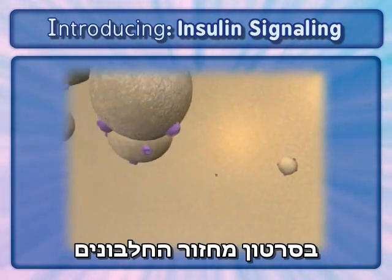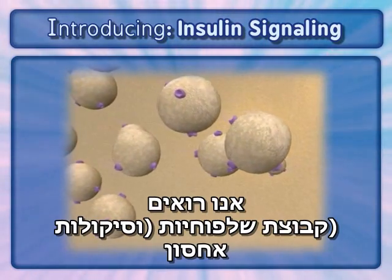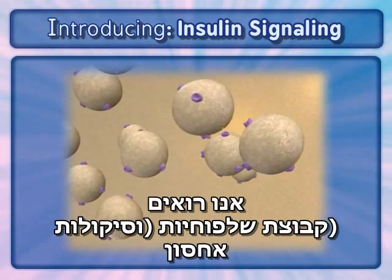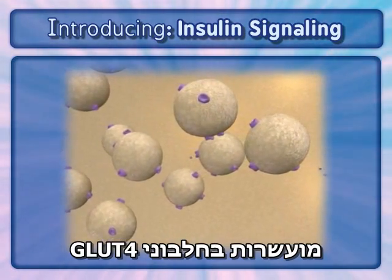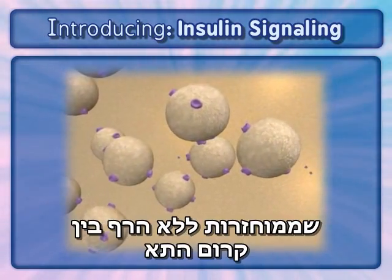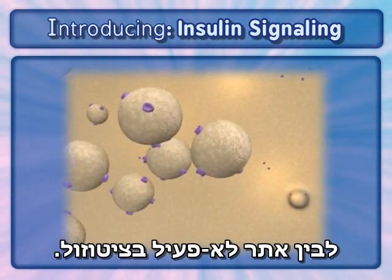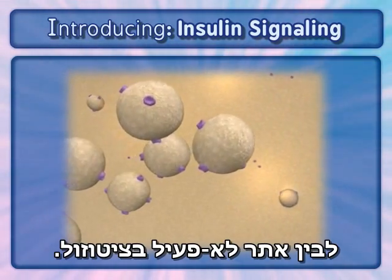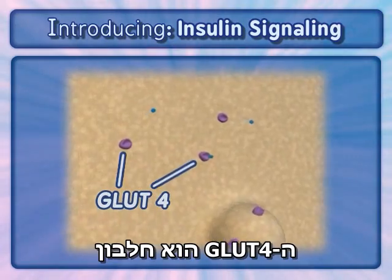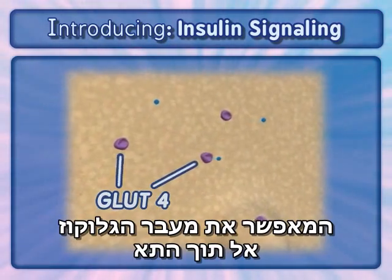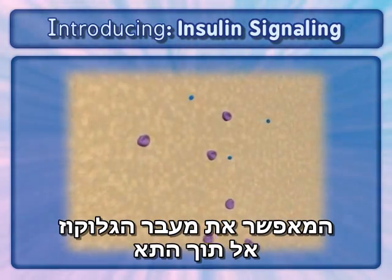In the protein recycling animation, we see a group of storage vesicles enriched with GLUT4 proteins continuously recycling from the cell membrane to an inactive location in the cytosol. GLUT4 is a protein that facilitates the movement of glucose into the cell.